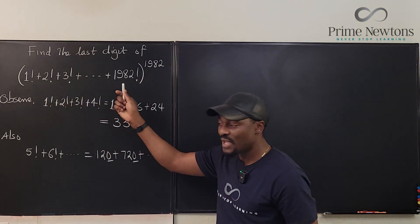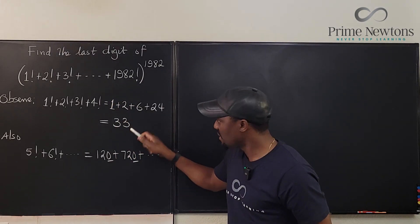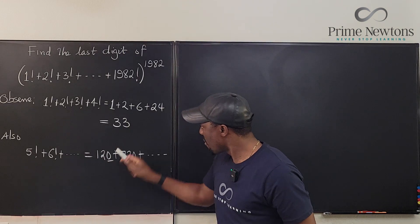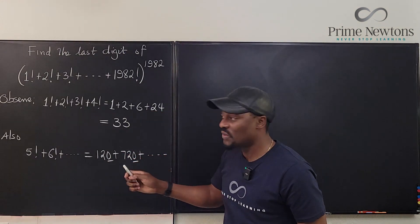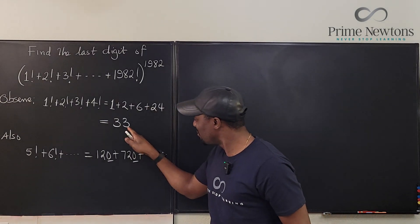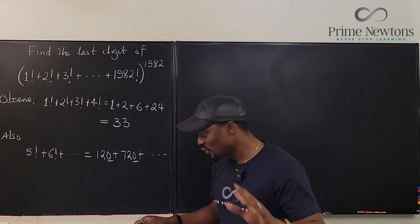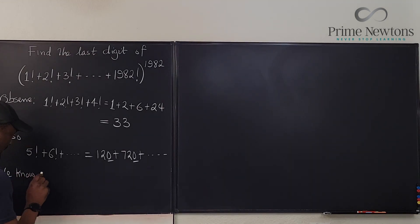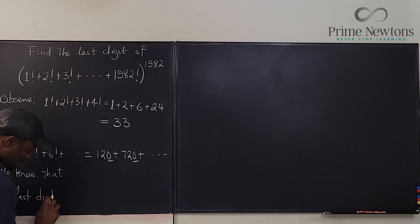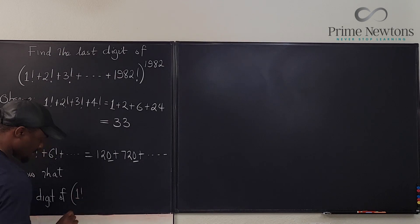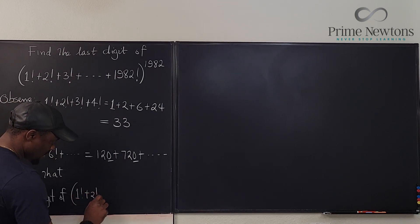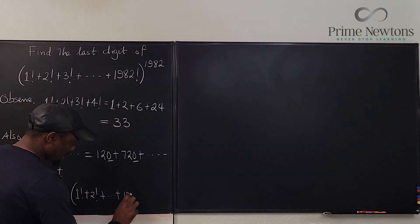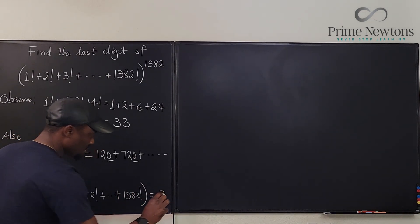So the last digit of the sum will be provided by the already existing sum of the first four factorials, because every other term contributes only a 0. The last digit of this entire sum is going to be 3. We know that the last digit of 1! + 2! + ... + 1982! is equal to 3.